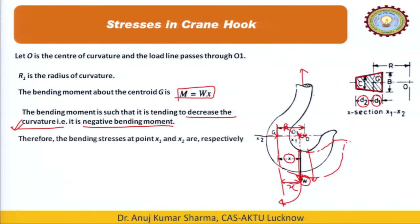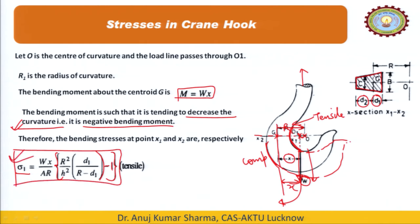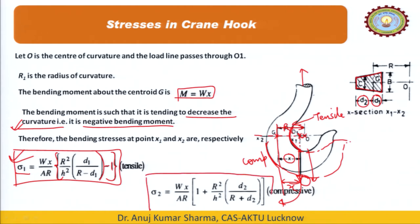Therefore, the bending stresses at points x1 and x2 are calculated respectively. When the hook stretches, the inner surface experiences tensile stress (σ₁) and the outer surface experiences compressive stress (σ₂). σ₁ = Wx/(A·R) × [R²/h² × d₁/(R − d₁) − 1], which is tensile at the inner surface. σ₂ = Wx/(A·R) × [1 + R²/h² × d₂/(R + d₂)], which is compressive at the outer surface.